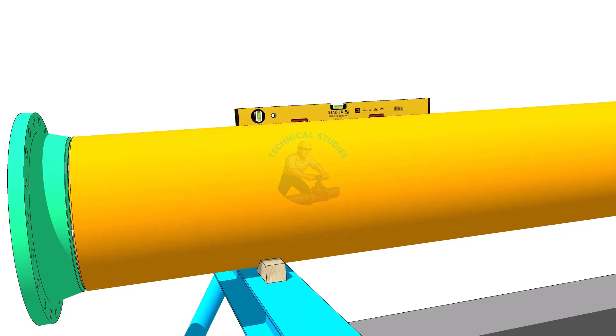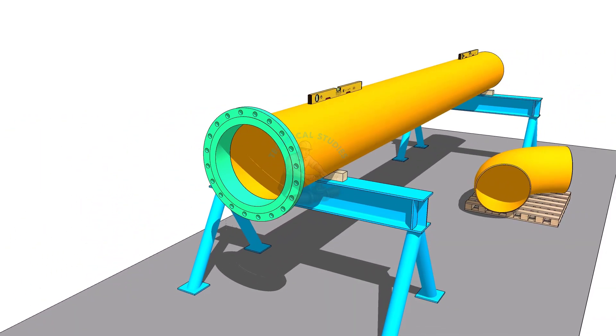Place the spool on suitable stands. Level the pipe properly. Provide proper supports to prevent the pipe from rotating.